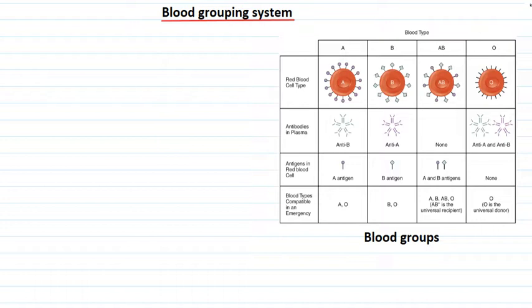Then there are other proteins called antigens. These antigens are actually responsible for the production of antibodies. So the antibodies are produced in response to antigens. Thus, for every specific antigen, there is a specific antibody.